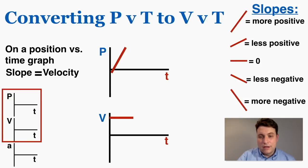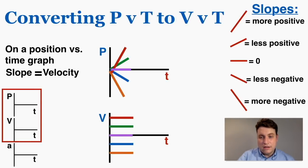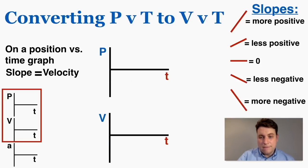That would just be a flat line — staying at the same velocity, very positive. If I have a less positive slope on the position-time graph, that results in a less positive but still positive constant velocity. If I have a slope of zero on the position-time graph, that means I also have a velocity of zero. And if I have negative slopes, those correspond to negative velocities. So if you have a constant slope on the position-time graph, you have a constant velocity on the velocity graph, represented by a flat line.